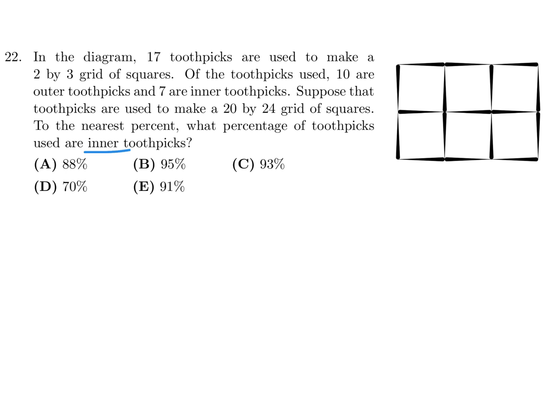They give you this example to explain the question a little bit. You've got 17 toothpicks, and I'll highlight the outer ones in red. As you can see, they've told you that 10 of them are outer. And then the other ones — 1, 2, 3, 4, 5, 6, 7 — they're saying are the inner ones. So that's basically just an example.